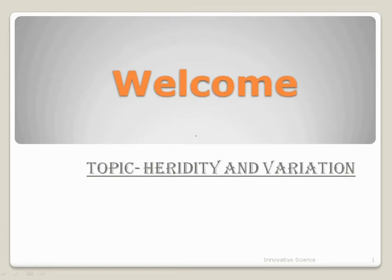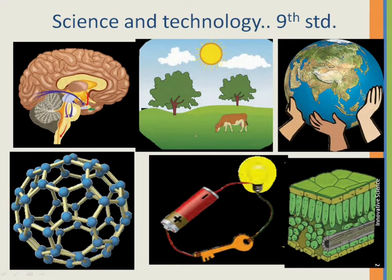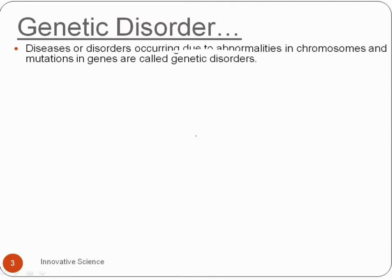Today's topic is heredity and variation. In this lecture we are going to discuss about genetic disorder. First we will see the definition of genetic disorder. Diseases or disorders occurring due to abnormalities in chromosomes and mutations in genes are called genetic disorders. Genetic disorder is one type of disease.